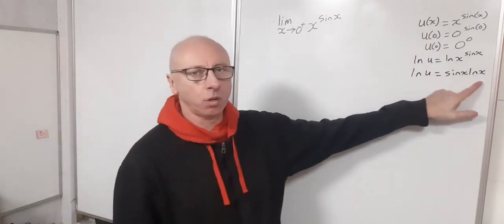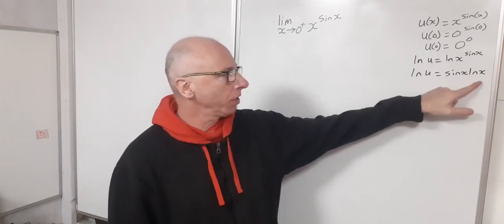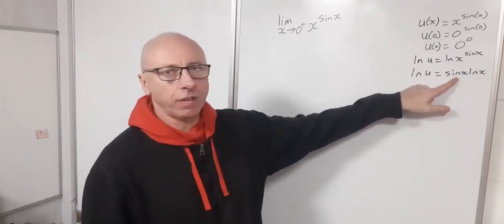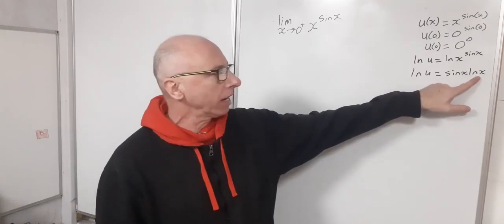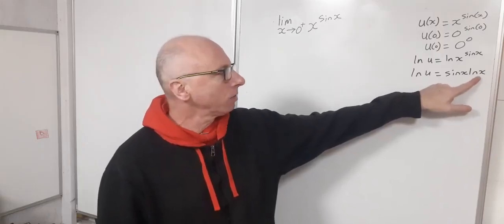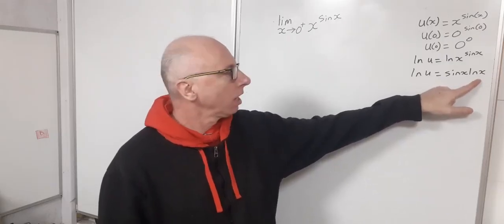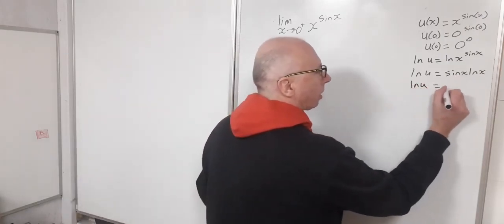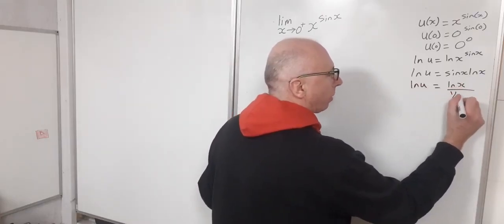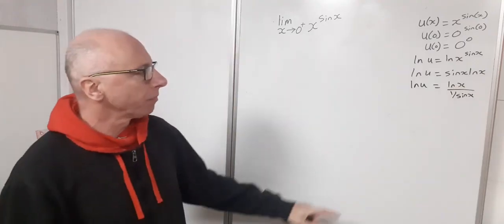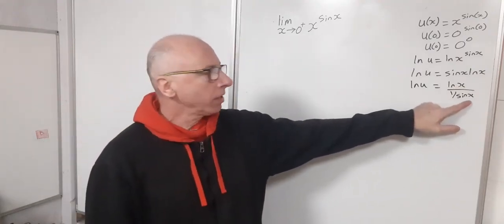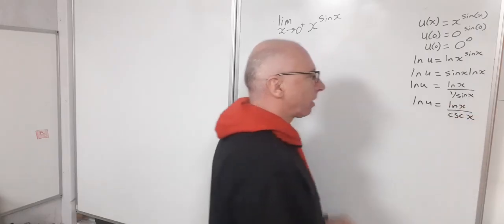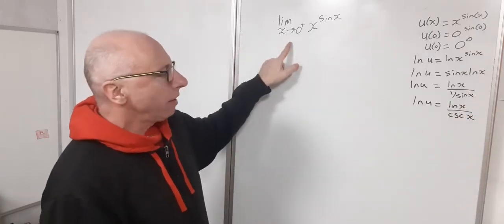We're still not in fraction form, and for L'Hôpital's rule we need a fraction. We could write sin(x) in the denominator as 1/sin(x), but putting log(x) in the denominator as 1/log(x) won't help since log(x) persists through repeated differentiation. So instead, let's write log(u) = log(x) / (1/sin(x)), and since 1/sin(x) is cosecant, we get ln(u) = ln(x) / csc(x).